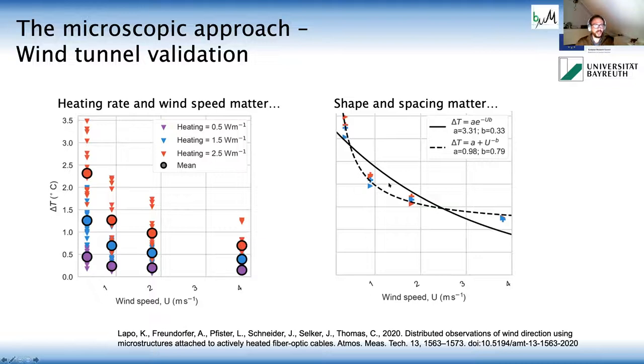And the right hand side, you see there's little symbols, the little crosses and the triangles. They show different shapes. And they show different sizes and different spacings of these microstructures. So that matters as well. And the dashed line here is the representation that fits our experiment results the best.